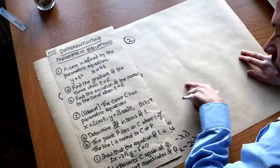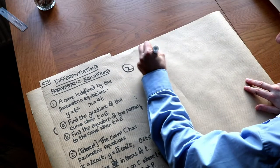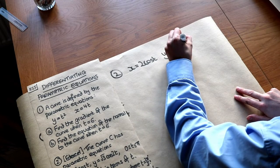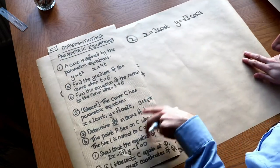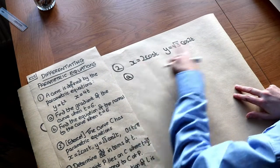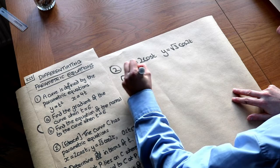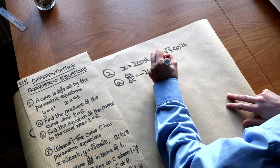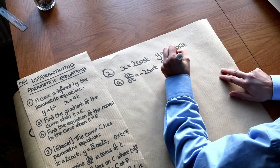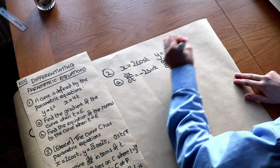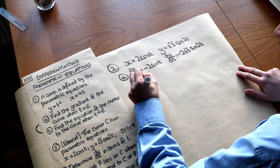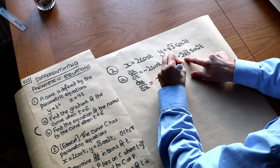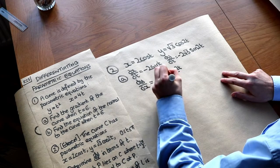For the second question, a curve has parametric equations x equals 2 cos t and y equals root 3 cos of 2t. We need to determine dy over dx in terms of t. Differentiating: dx over dt equals minus 2 sine t. Differentiating y with respect to t, we multiply by 2, giving 2 root 3, and since differentiating cos gives minus sine, we get dy over dt equals minus 2 root 3 sine 2t. So dy over dx is minus 2 root 3 sine 2t over minus 2 sine t.